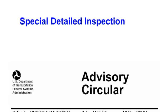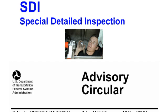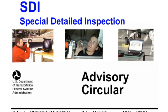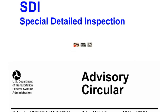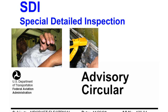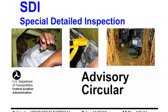A Special Detailed Inspection, or SDI, is an intensive examination of a specific item, installation, or assembly to detect damage, failure, or irregularity. This type of examination is likely to make extensive use of specialized inspection techniques and equipment. Intricate cleaning and substantial access or disassembly procedures may be required.